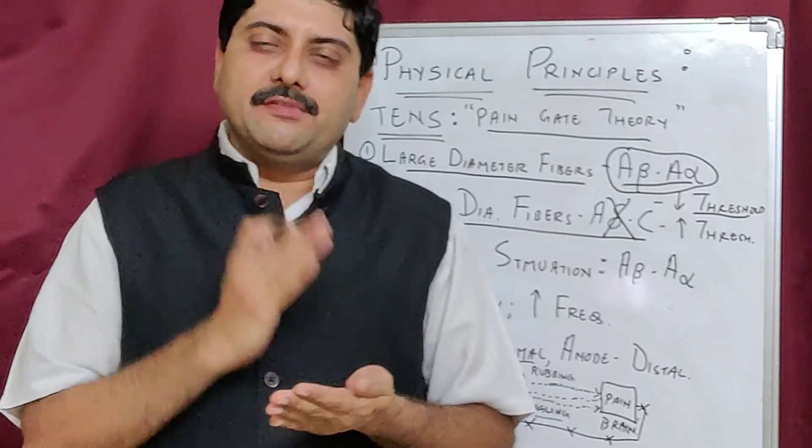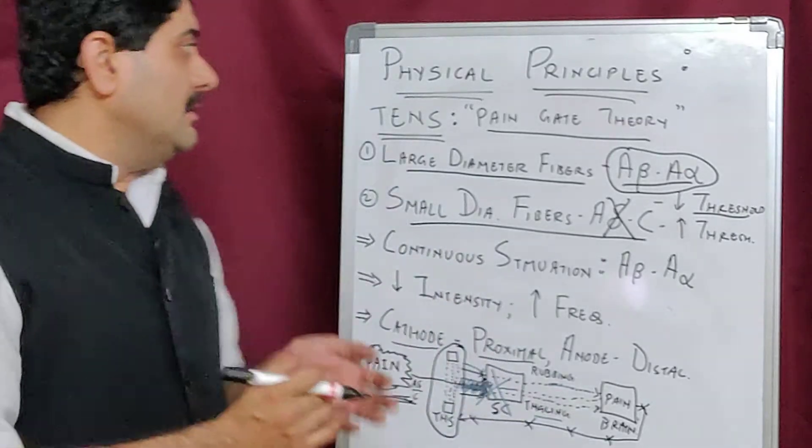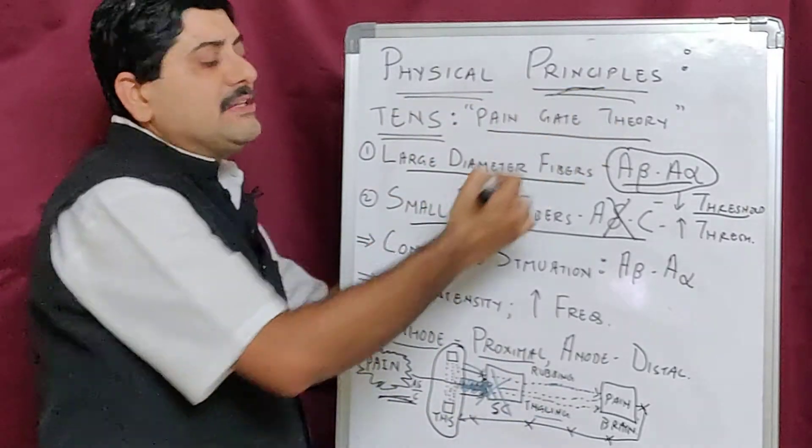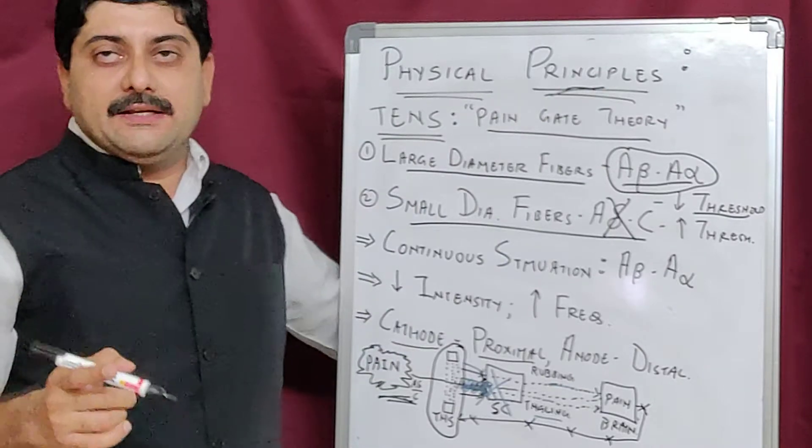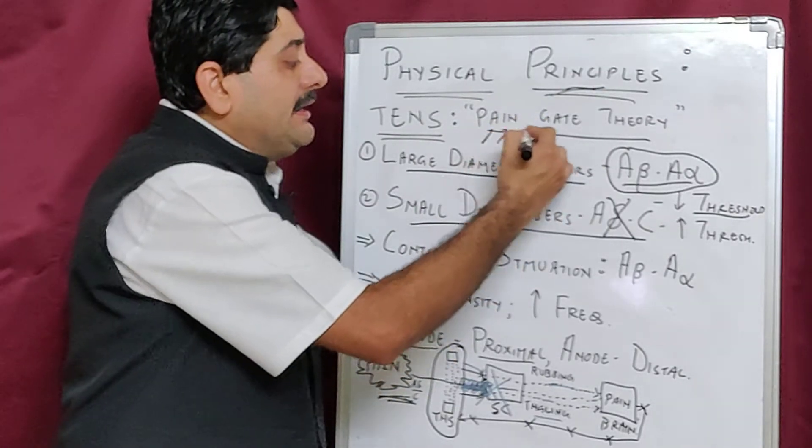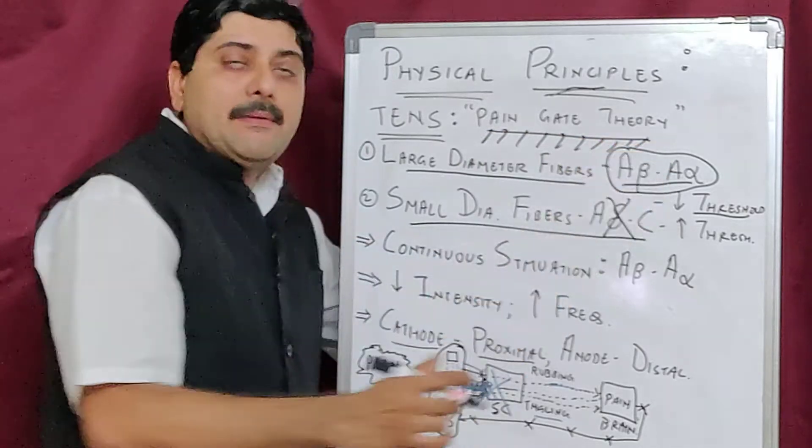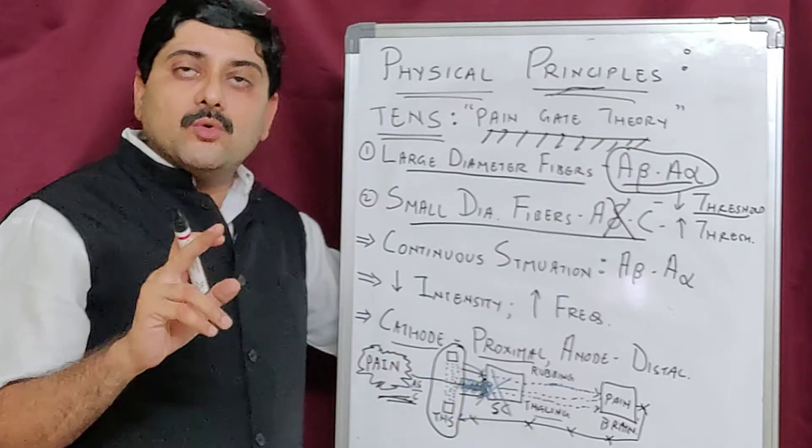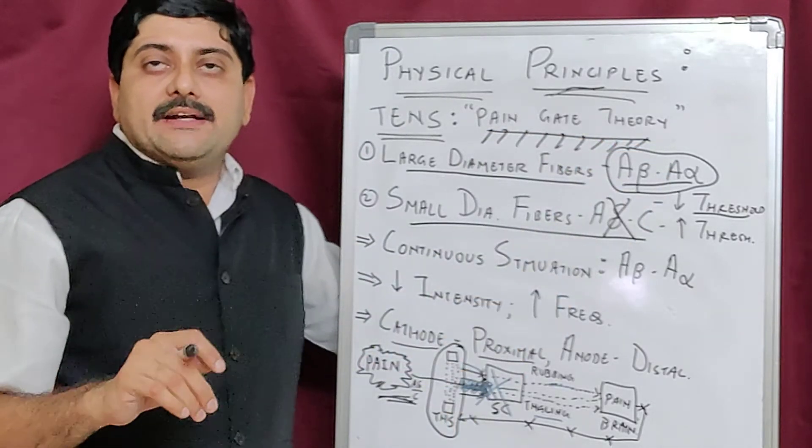This is the physical principle on which the TENS is working. Basically, we can see that it is working on the pain gate theory. To remember the pain gate theory: when the door is closed, the dog cannot enter.